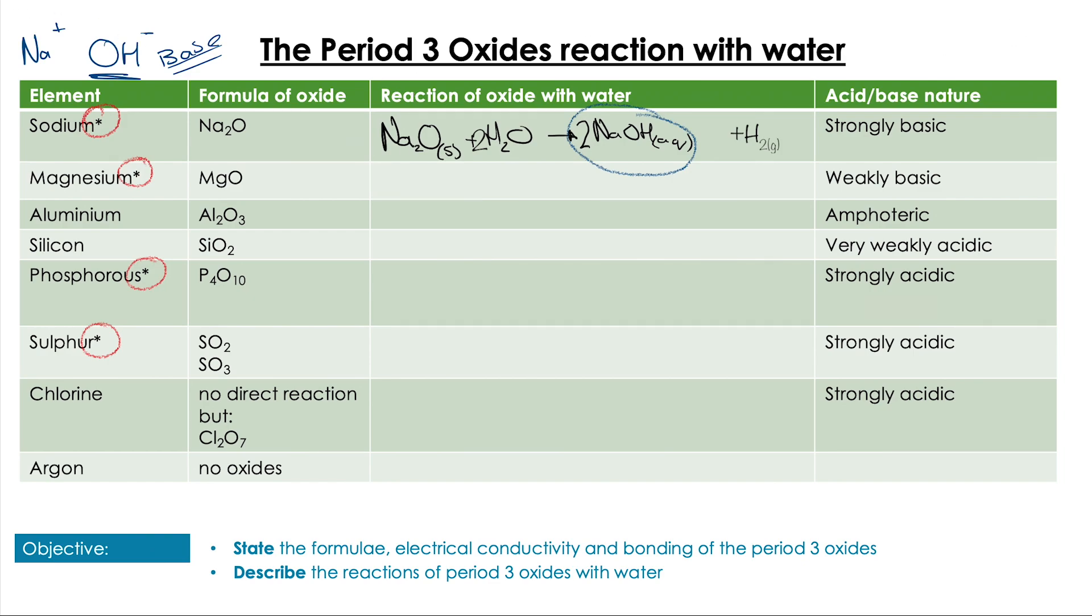With magnesium, we have a similar reaction. The magnesium oxide reacts with water to form magnesium hydroxide aqueous. Once again, however, this is not such a strong base, and so it is weakly basic. It doesn't dissociate into Mg2+ and OH- ions quite as easily as sodium, so it's weakly basic.